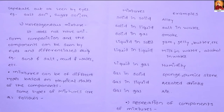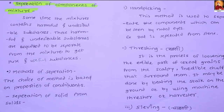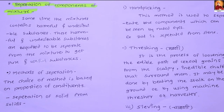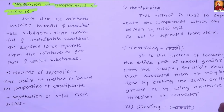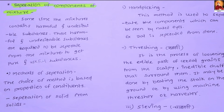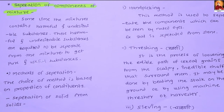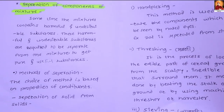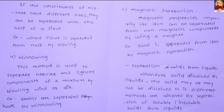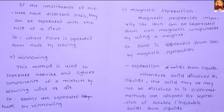Separation of components of mixture. Separation of solid from solid methods include hand-picking, threshing — by beating the stock of plant on the ground. Wheat flour is separated from husk by sieving, which is one of the best examples of sieving.